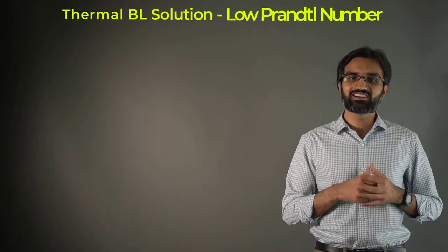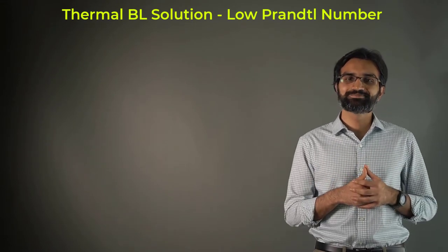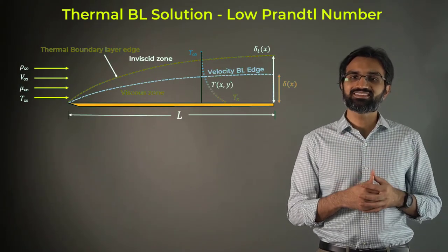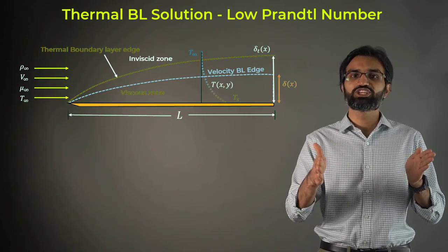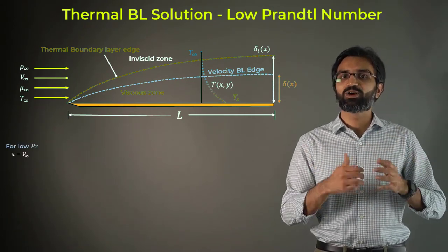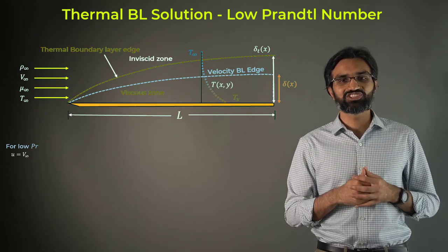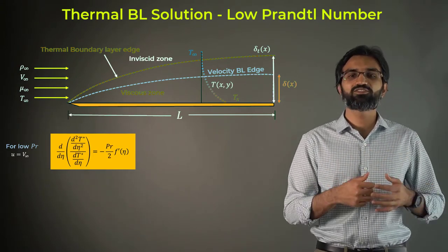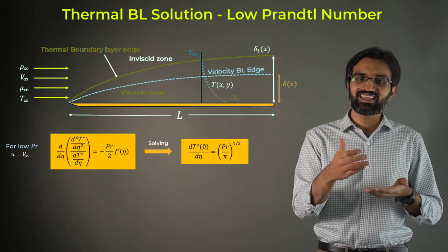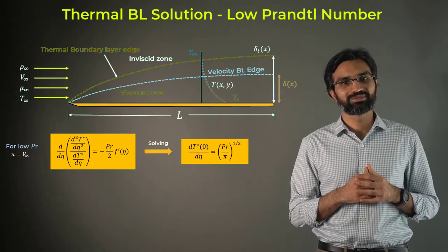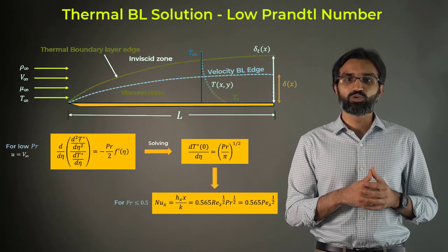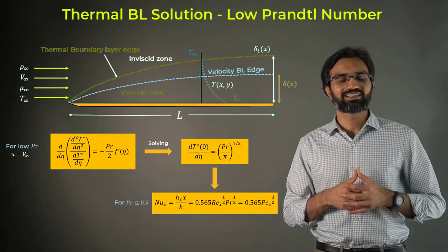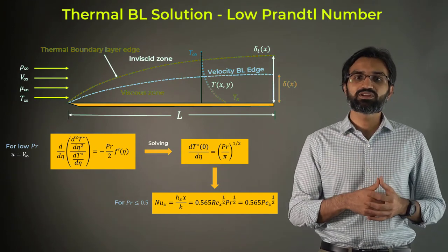For low Prandtl number fluids such as liquid metals, the thermal boundary layer is much thicker than the hydrodynamic boundary layer. Because of this, we can assume a uniform velocity U equal to V∞ throughout the thermal boundary layer. Using this condition and solving the appropriate ODE, we obtain the following solution to the first derivative of T*, which translates into the following local Nusselt number relationship. For low Prandtl number fluids, the Nusselt number is proportional to the square root of Prandtl number, whereas for high Prandtl number fluids, it goes as the one-third power of the Prandtl number.